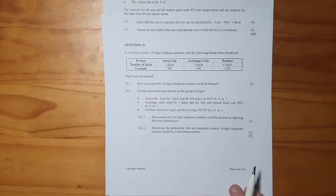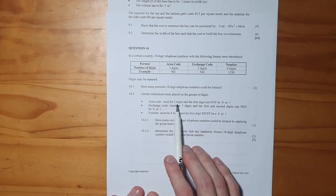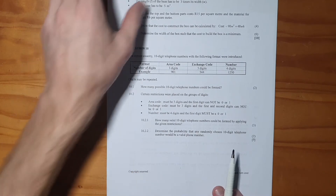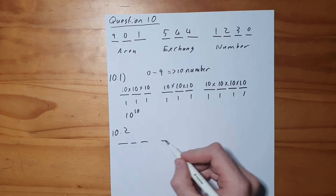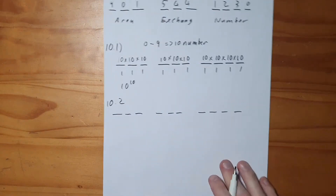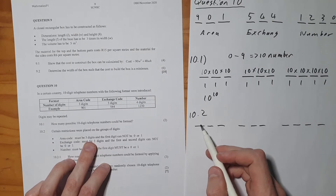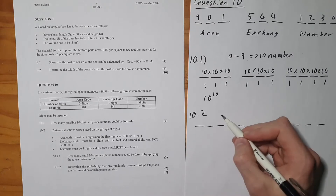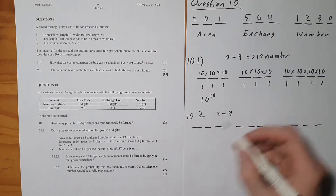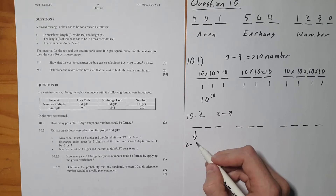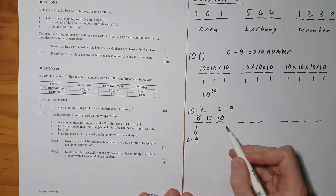Question 10.2 says certain restrictions were placed on the group of digits. The area code must be 3 digits and the first digit cannot be a 0 or a 1. So for the first digit of the area code, we count from 2 all the way to 9, which means there are 8 possibilities. For the remaining two digits of the area code, there are still 10 possibilities each.